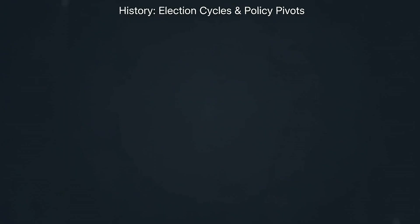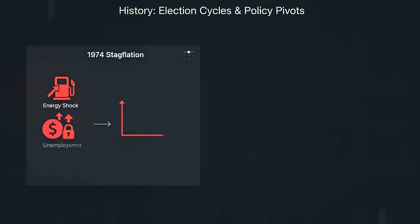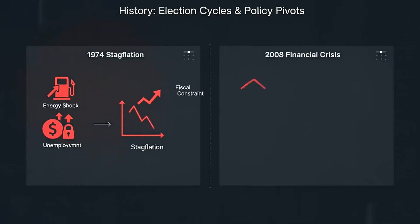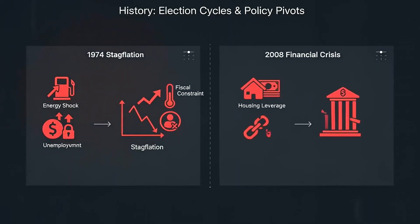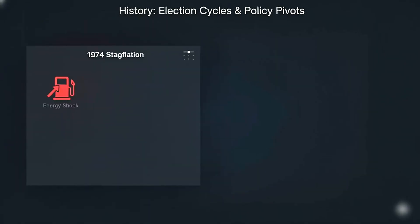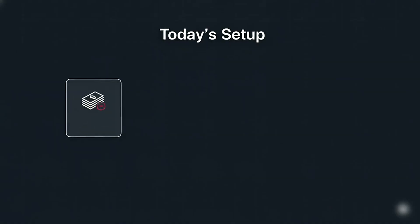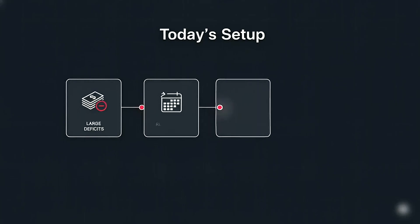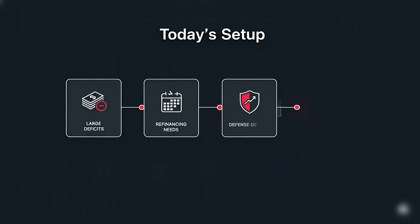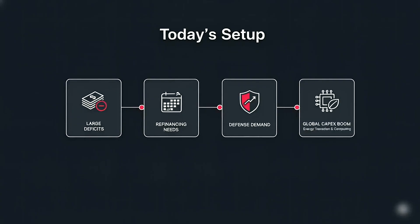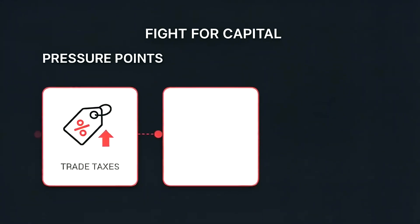What changed? History shows a pattern around election cycles and policy pivots. In 1974, energy shock plus fiscal constraint produced stagflation. In 2008, housing leverage met a funding squeeze. Today's setup is different, but rhymes: large public deficits, large refinancing needs, rising defence demand, and a global investment boom in energy transition and computing. Each fights for capital. Prices decide who gets starved.